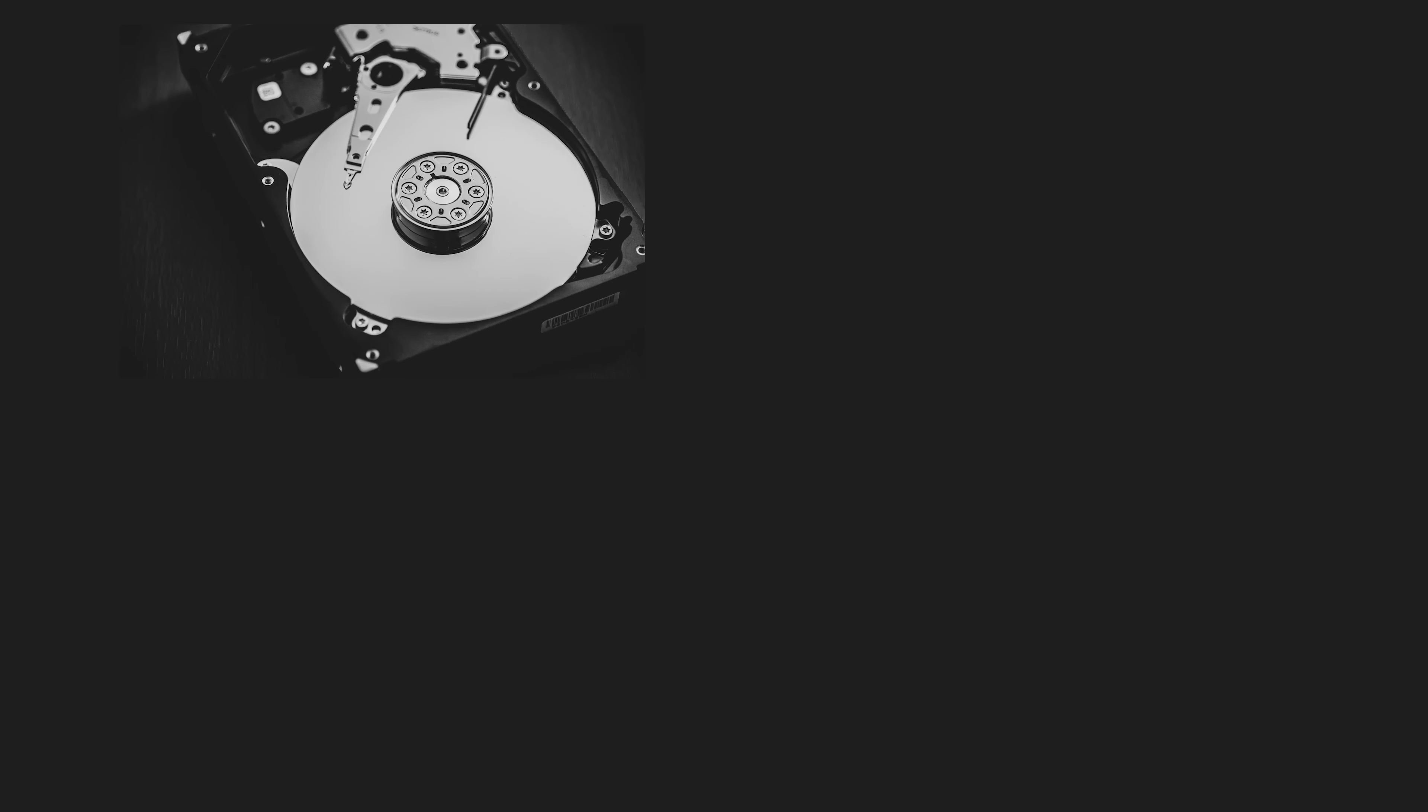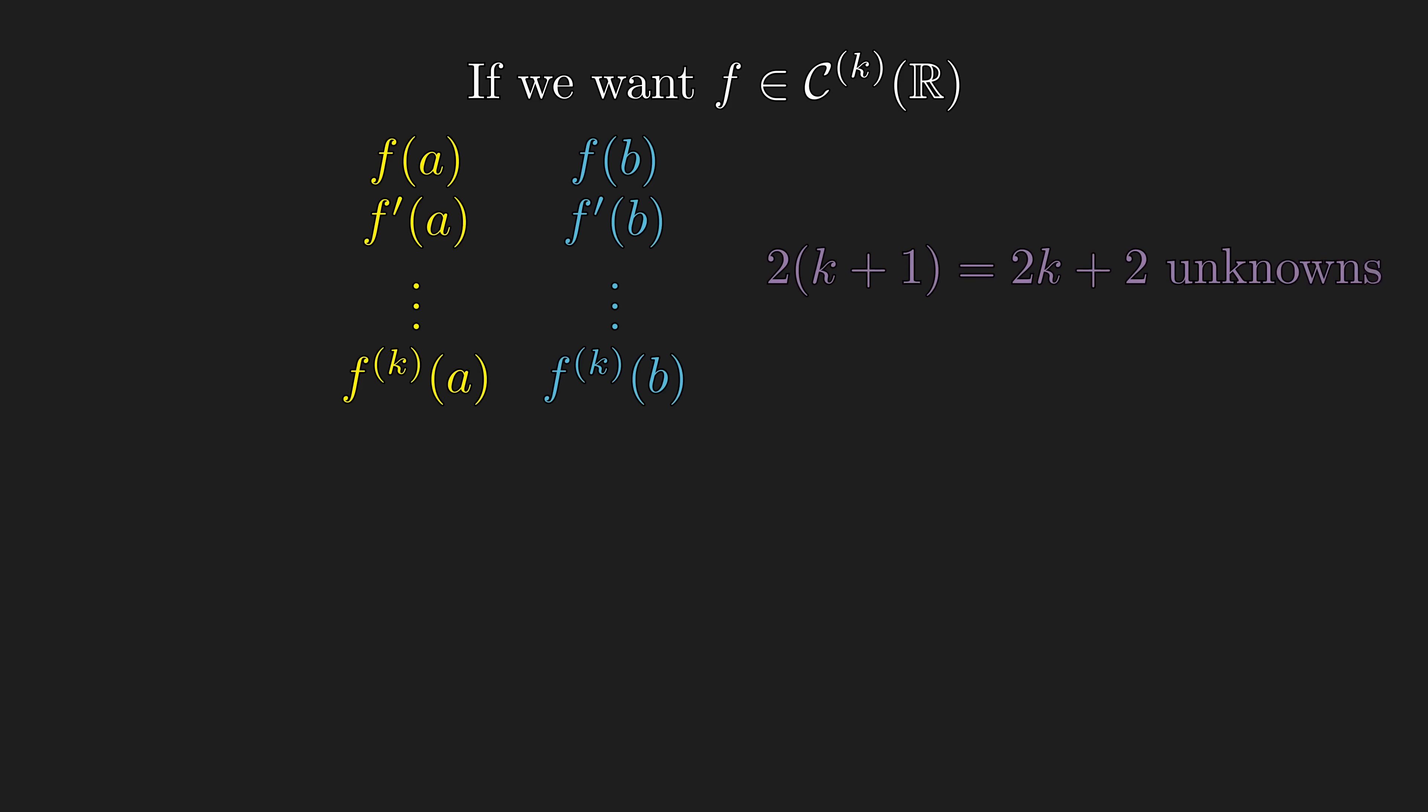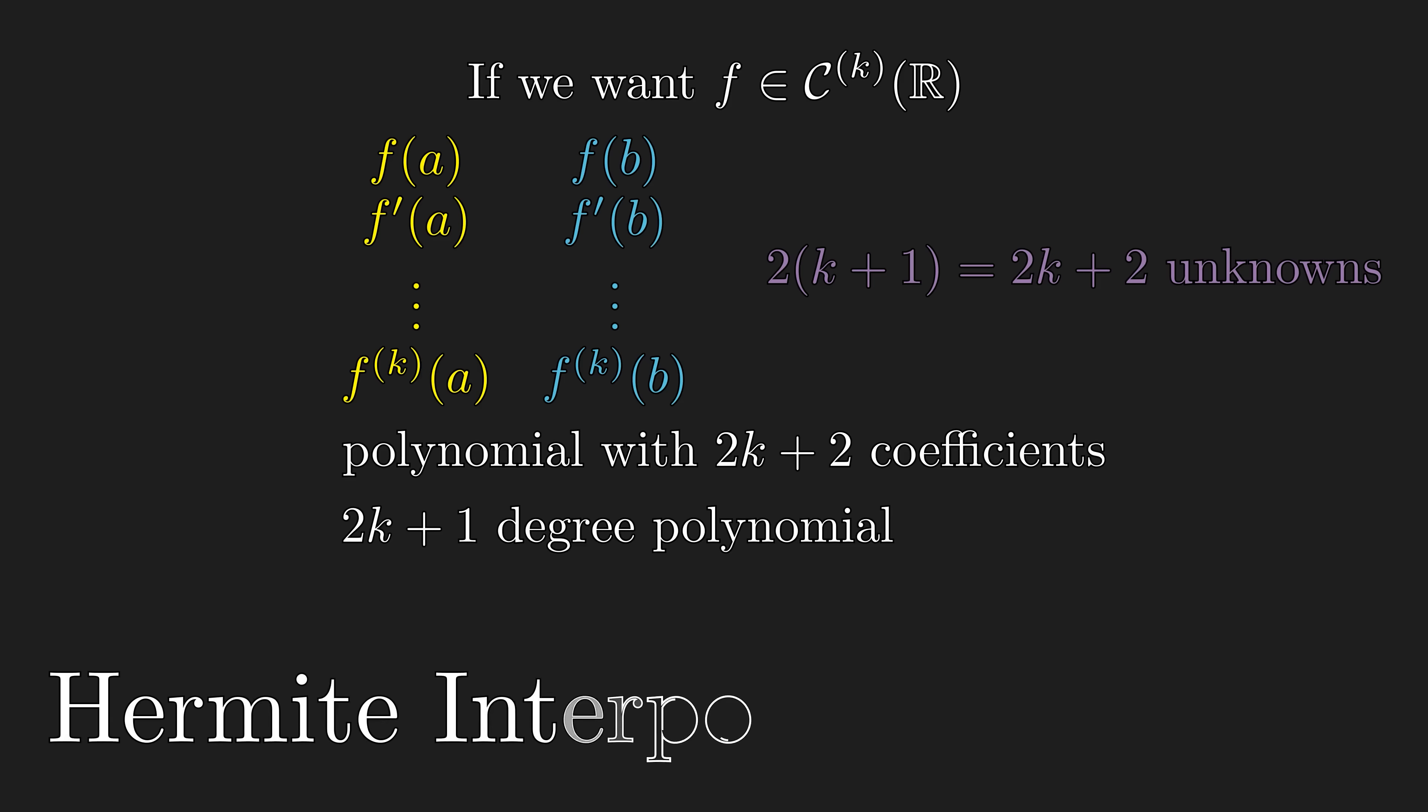In practice, when designing mechanical devices, we have to make sure that the second derivative, or the acceleration, is continuous. In general, if we want to construct a polynomial interpolation that is continuous up to kth derivative, we can use the exact same technique as we did for cubic, by matching the function values and its derivatives up to kth derivatives. And that leaves us with 2k plus 2 unknowns, which we can solve with 2k plus 1 degree polynomial. And this technique goes by the name of Hermite interpolation, although his name really is supposed to be pronounced Hermite, since he is a French mathematician.